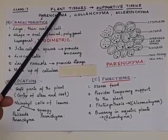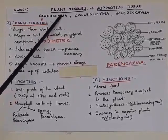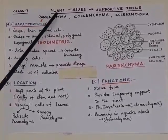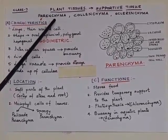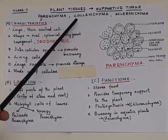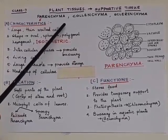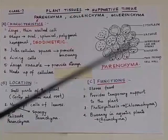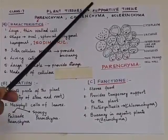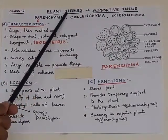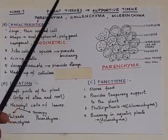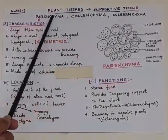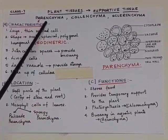In the previous video we had already done the protective tissue — protective simple tissue — under which came the examples of epidermis and cork. Today we will do the supportive tissue of plant tissues, which are parenchyma, colenchyma, and sclerenchyma, but today we will deal only with parenchyma.